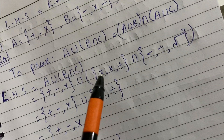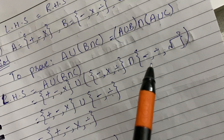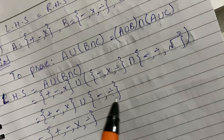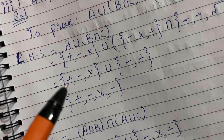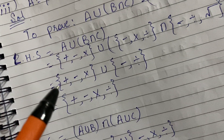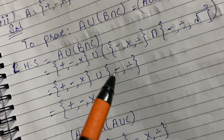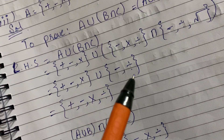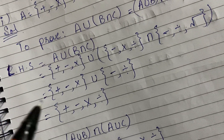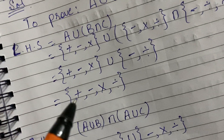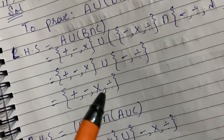The common symbols are subtraction and division, so we write B ∩ C as {-, ÷}. Now we take the union with A. We have A = {+, -, ×} and B ∩ C = {-, ÷}. For union, we write all elements together, so the result is {+, -, ×, ÷}.